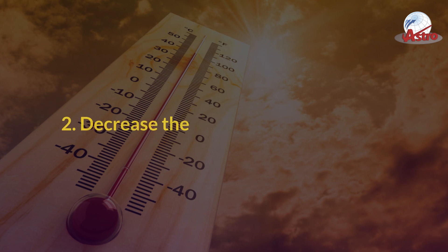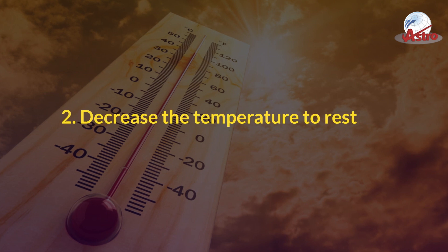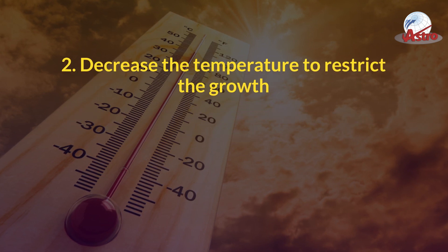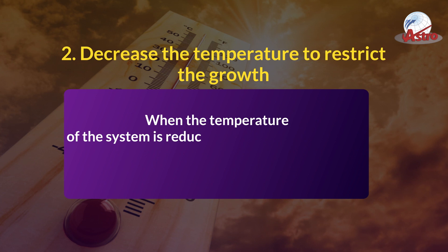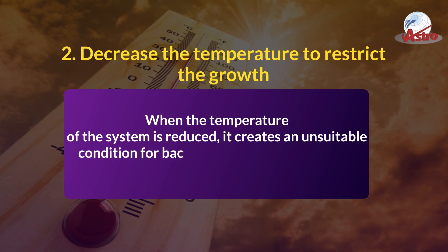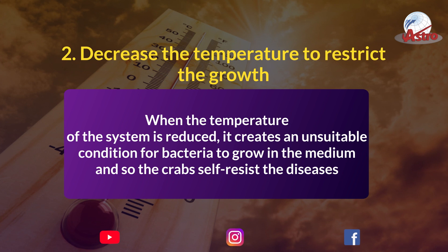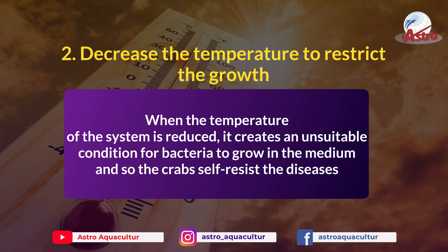Measure 2: Decrease the temperature to restrict the growth. When the temperature of the system is reduced, it creates an unsuitable condition for bacteria to grow in the medium, and so the crabs self-resist the diseases.